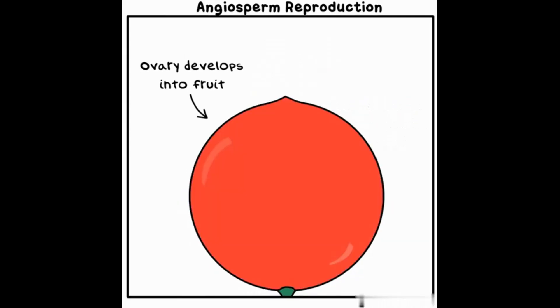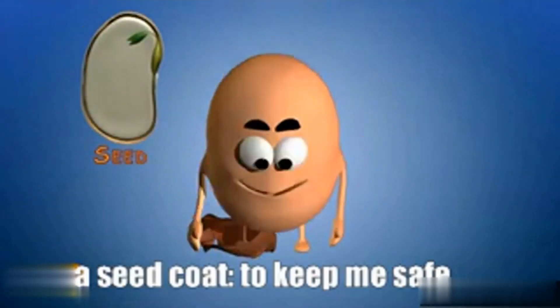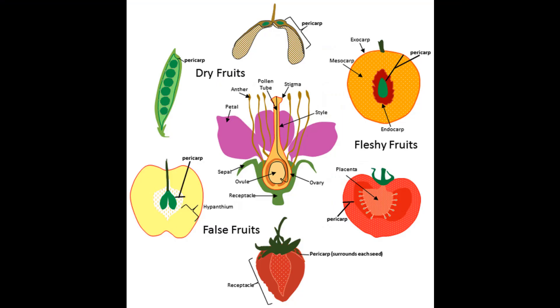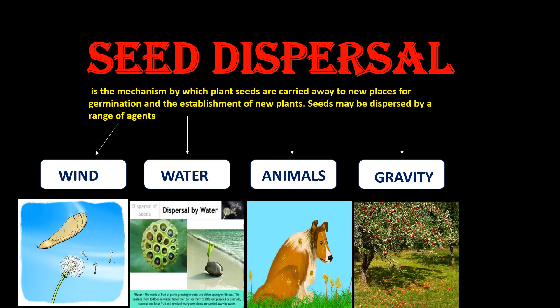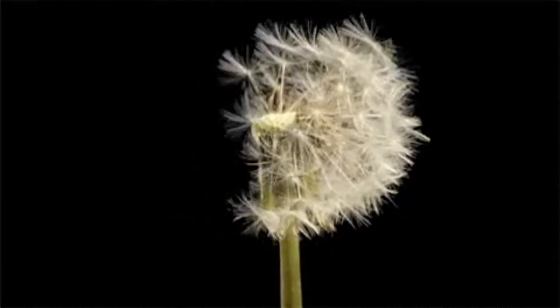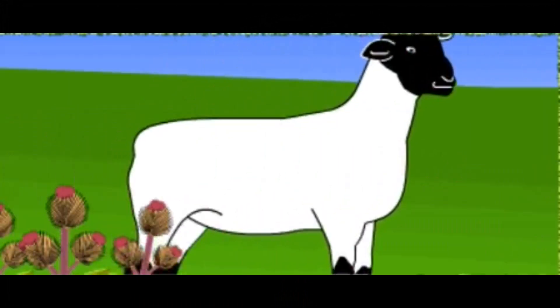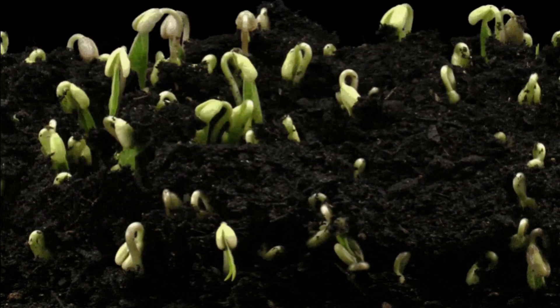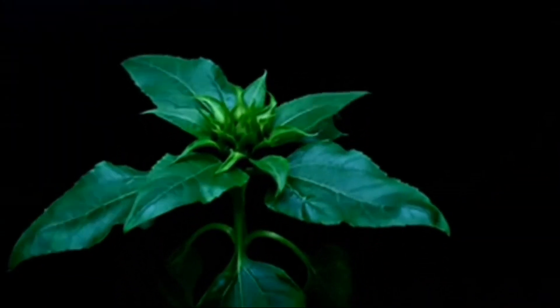After fertilization, the ovule develops into a seed containing the embryo and endosperm, surrounded by a protective seed coat. The ovary of the flower develops into a fruit that surrounds and protects the seeds. The fruit helps in seed dispersal by various agents such as animals, wind, or water. Under favorable conditions, the seed germinates and the embryo grows into a new plant, completing the life cycle.